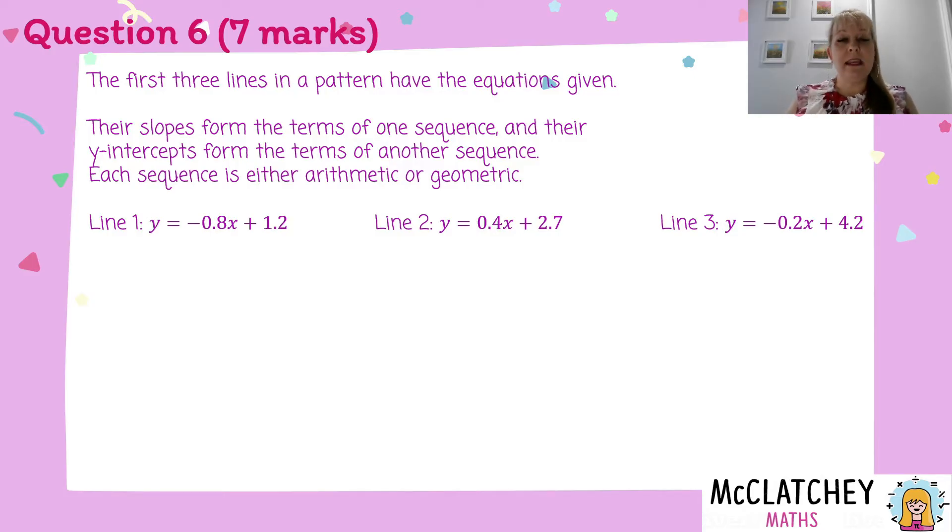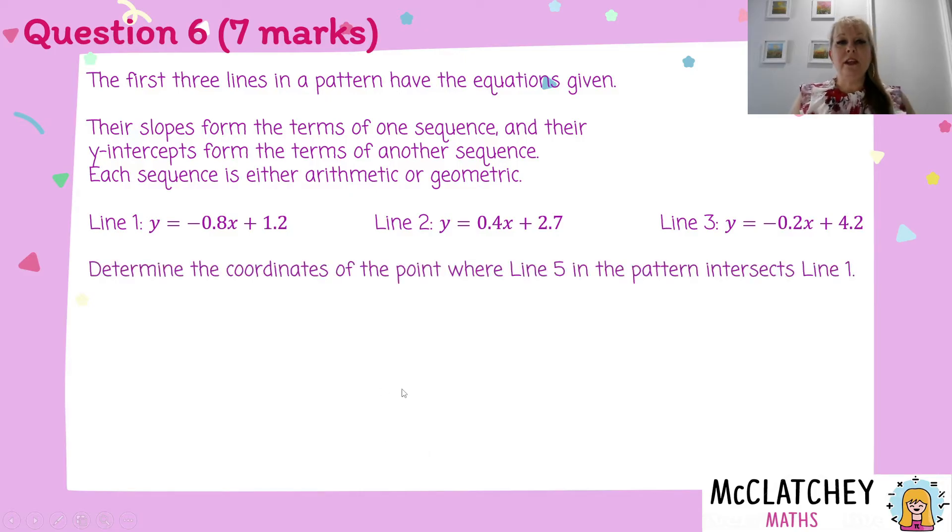Wow, there's a lot to unpack here. We've got three linear equations, and we have to take the slopes from each of those to make one sequence, the y-intercepts from each of those to make a second sequence. So firstly, we've got to determine the coordinates of the point where line 5 in the pattern intercepts line 1.